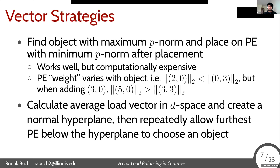Another technique is to calculate the average load vector across all objects and processors, put that as a point in D-dimensional space where D is the number of dimensions, create a normal hyperplane at that point, and then iteratively allow the furthest PE below that hyperplane to choose an object to get closer to the average. This can also be computationally difficult for similar reasons, but it's a way to converge to some equilibrium. We have ideas on how to optimize these — they work, but they're kind of slow right now. It's quite difficult when you have to consider all aspects of a load vector.